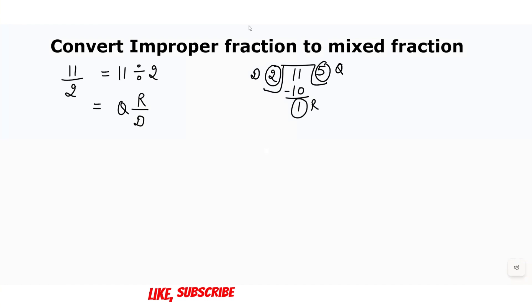Remember: D for divisor, D for denominator. So we write 5 in place of quotient, 1 in place of remainder, and 2 in place of divisor. So 11 by 2 can be written as 5 and 1 by 2.